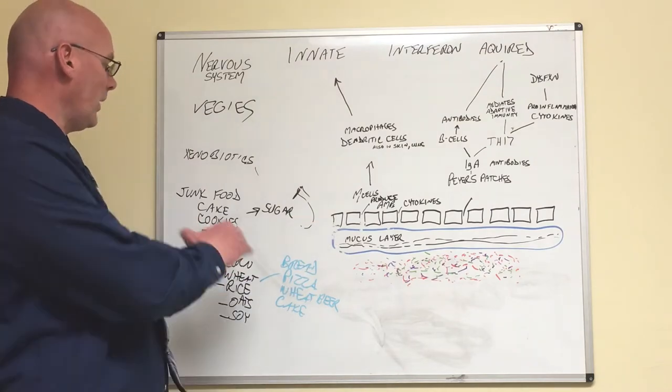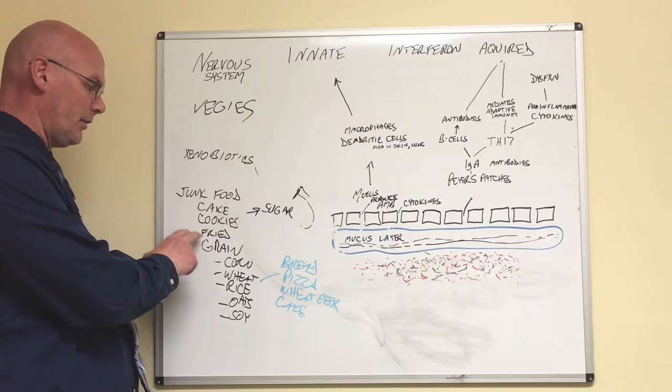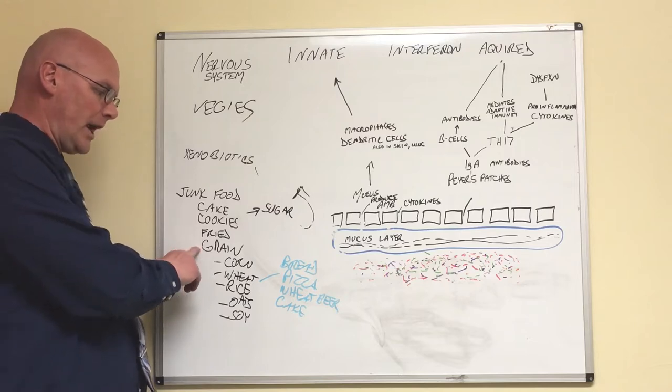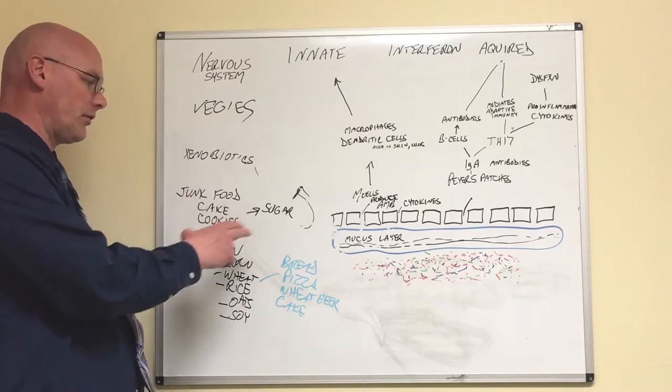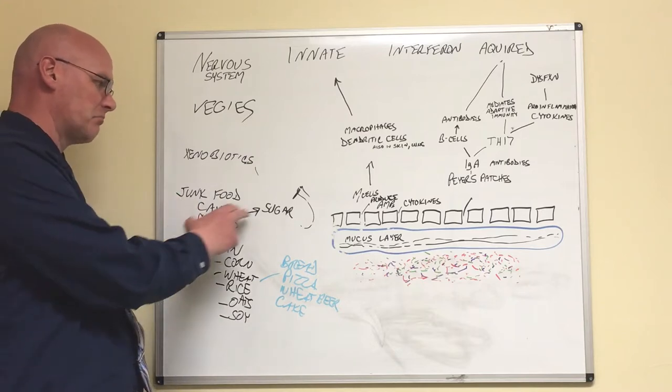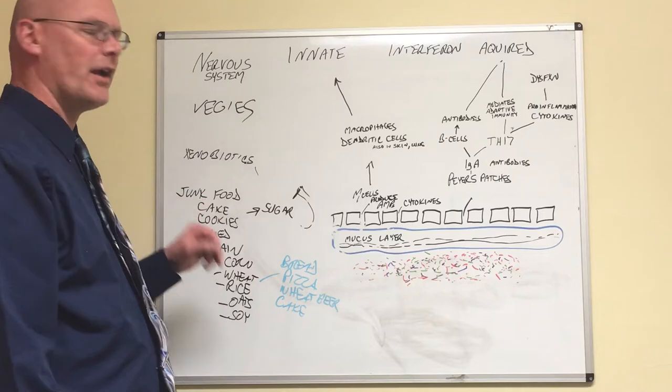Now, let's say we have some junk food. And that includes fried foods, grain, corn, wheat, rice, oats, and soy. Or just sugar like cake, cookies, candy. Let's say we have a piece of cake.